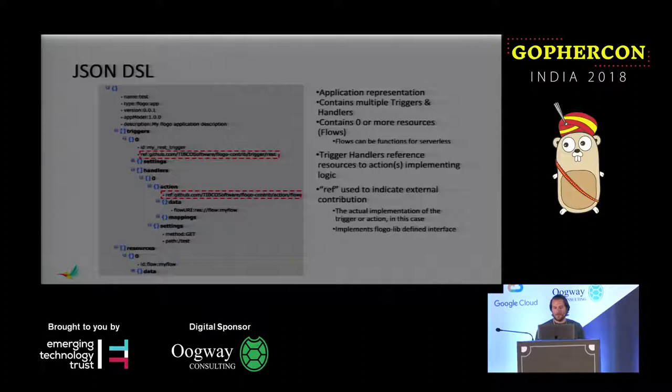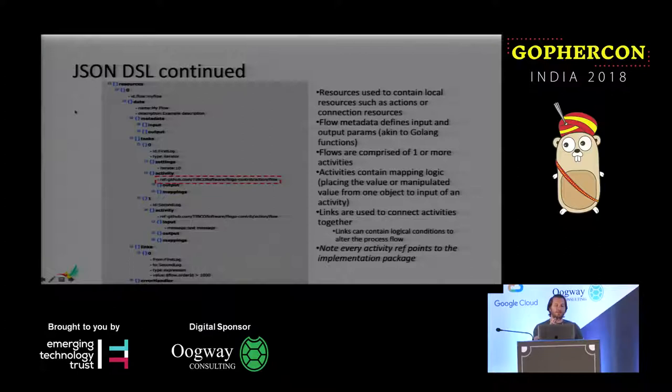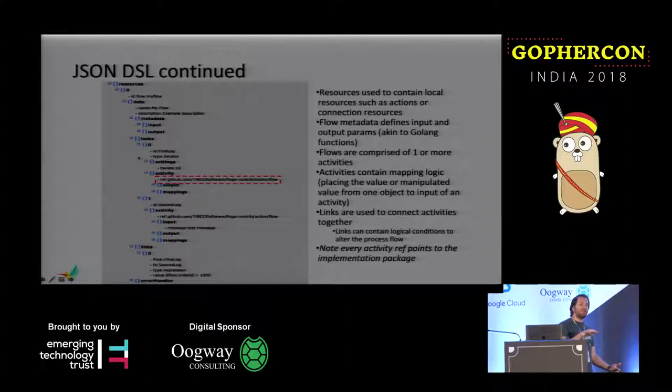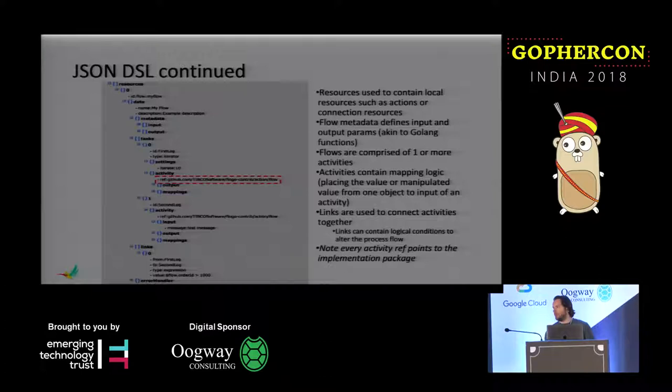Continuing to look at the DSL — the triggers can dispatch flows or dispatch actions. Actions can simply be Go packages, but they can also be embedded flow logic. The flow logic is comprised of one or more tasks. Tasks are activities, and activities implement specific logic, like write to a database, query a database, publish a message on a Kafka topic, things like that.